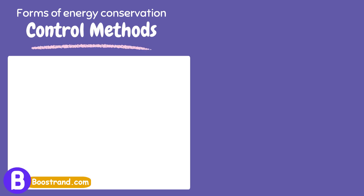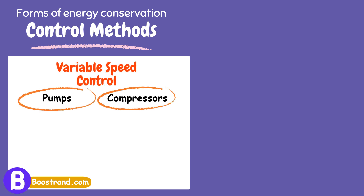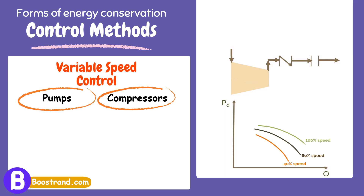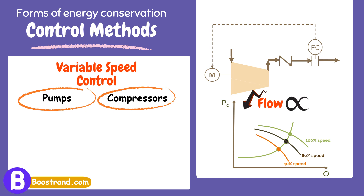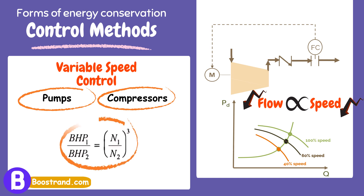The fifth way is control methods, which can significantly save a lot of power. A famous example is the use of variable speed drives in pumps and compressors. Variable speed drives (VSD) allow the speed of pumps and compressors to be adjusted to match the process demand. This is much more energy efficient than running them at constant speed and throttling the flow with control valves. When we need much less flow from the pump or compressor, we can reduce the speed of the impeller instead of throttling the discharge control valve. This shall dramatically reduce the power consumed, as power is proportional to the cube of speed.